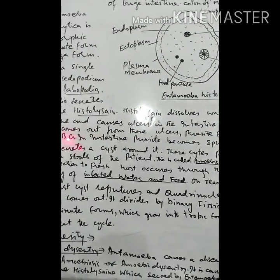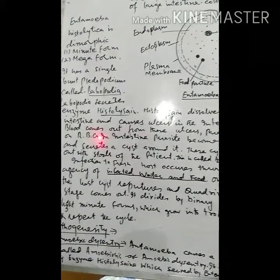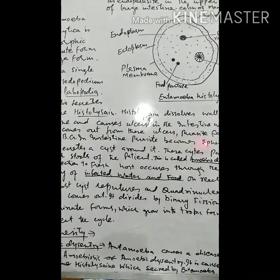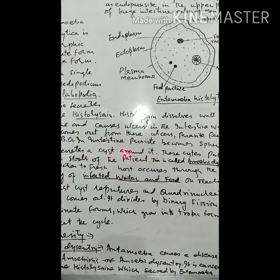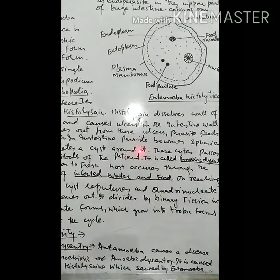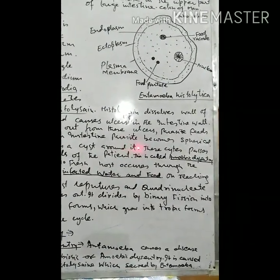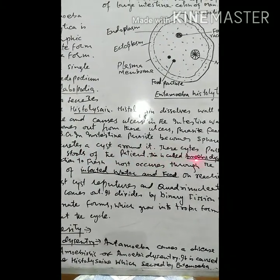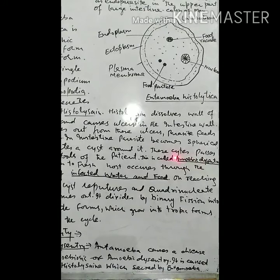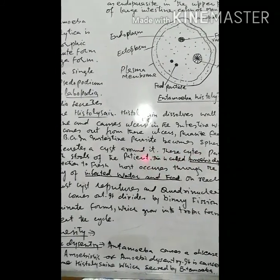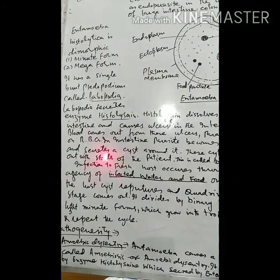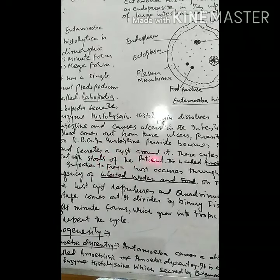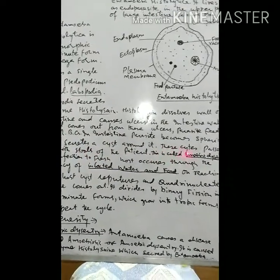The parasite feeds on the red blood cells of the blood of man. In the intestine, the parasite becomes spherical and secretes a cyst around it, forming a small ball-like structure. These cysts pass out with the stools of the patient, which contain blood. This is called amoebic dysentery.